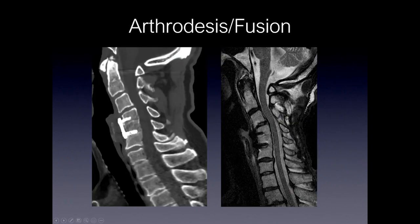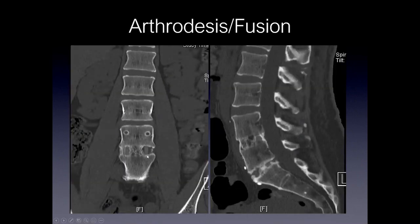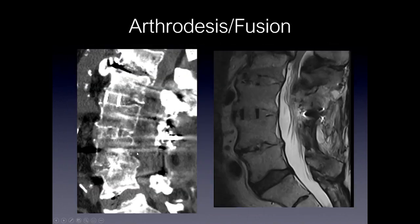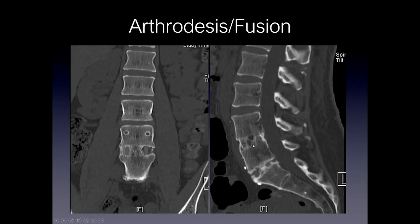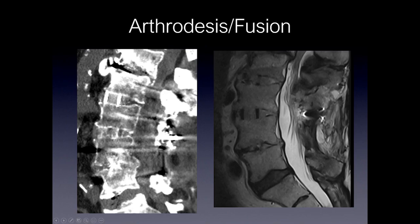Here are some examples of arthrodesis or fusion. You can see clearly that there's bony bridging across the disc space in this example. On the MRI, you can see continuity of the marrow signal between the two vertebral bodies. Here's another example — there is an interbody cage, and through the center of the cage and laterally there's clear bony fusion, as seen on the sagittal image. On this CT and MRI, you can see bony density across the disc space, and on the MRI there's obscuration of the margin between the cortex and bone graft material, with continuity of marrow signal between the two vertebrae suggesting fusion.